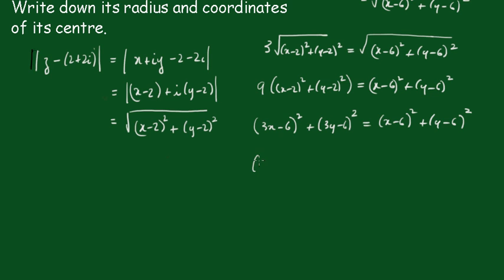I'll leave this on this side, bring this across. All squared is equal to y minus 6 all squared minus 3y minus 6 all squared. You see now I've got the difference in squares.